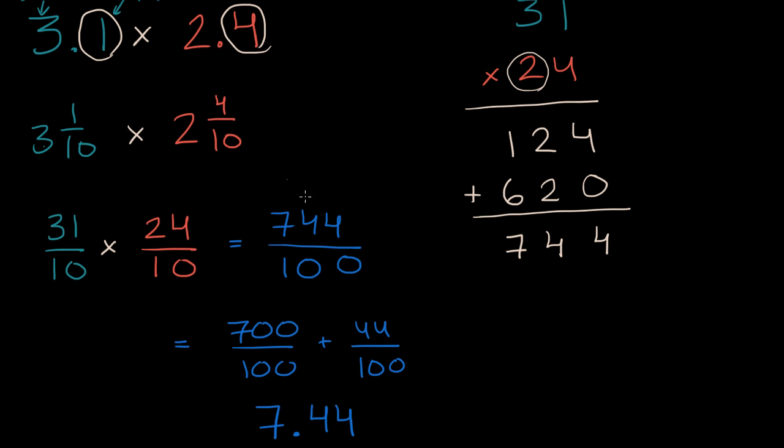Think about why that might work. If you just multiply the numbers as if they didn't have decimals, so you would have gotten seven forty-four, and you say, hey, I got two numbers behind the decimal, so my product is going to have to have two numbers behind the decimal. Why does that work? Or does it always work? And how does it relate to what we did here, which is converting these things to improper fractions, and then multiplying it that way.